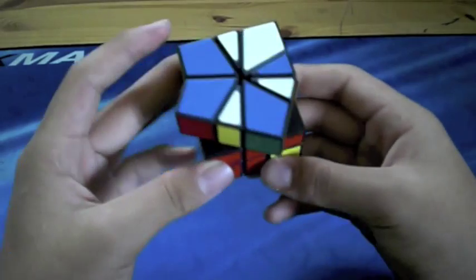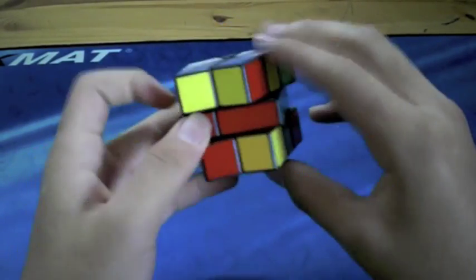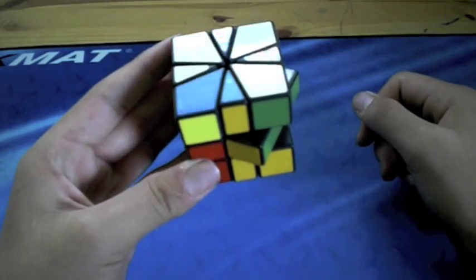Slice it again. Then we have the same shape on the bottom and the top again. And align them so that they are facing the same direction. Slice it one more time, and then we have the square.